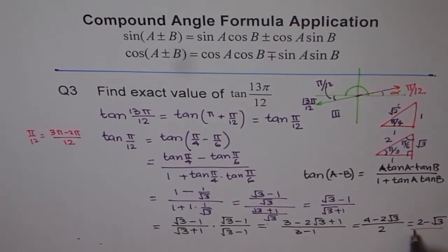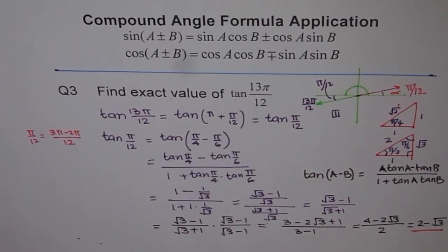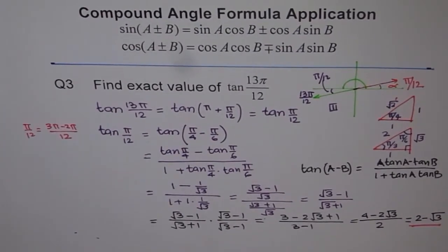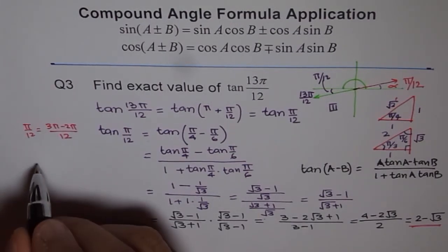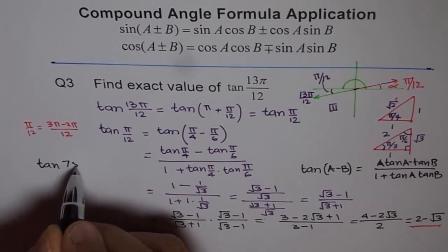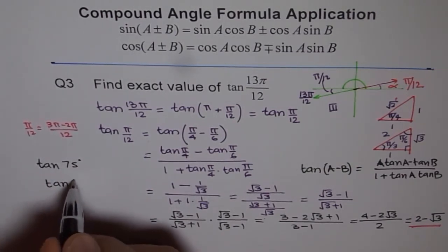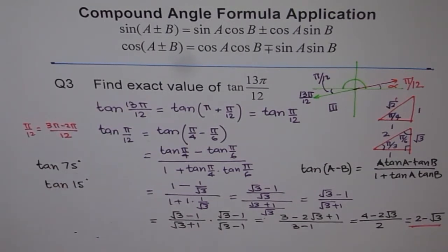That is the simplified exact answer: tan 13π by 12 equals 2 minus √3. We took up this example with tan — the first two examples were with cos(A + B) and cos(A − B), and now we've done tan 13π by 12. I'd appreciate if you could try one with tan yourself: find tan of 75 degrees or tan of 15 degrees on your own. Use the formula tan A minus tan B over 1 plus tan A tan B, follow these steps, and try it yourself.